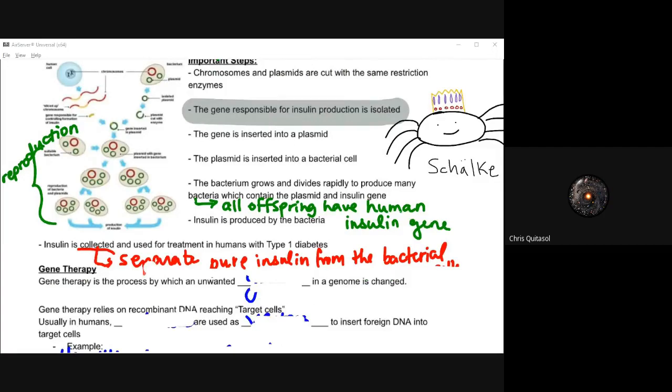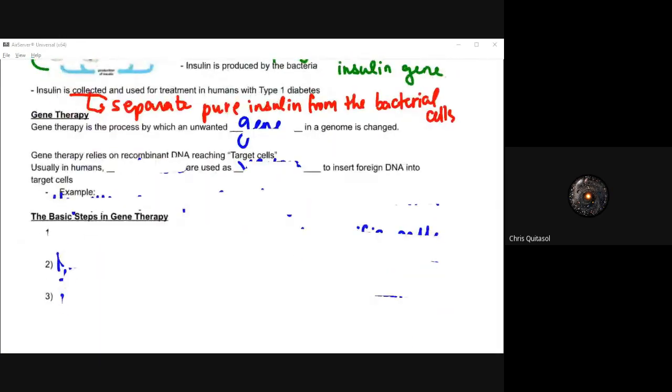That insulin is then collected and used for treatment of Type 1 diabetes. What they do is they separate it and distill it to create this pure insulin from those bacterial cells. So people who have Type 1 diabetes who are unable to produce insulin can get their insulin from essentially a bacterial cell that's been hijacked and forced to produce insulin. This happened in the 70s—we were capable of doing stuff like this in the 70s, and it's come a long way since.